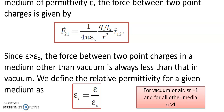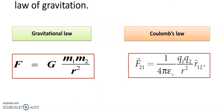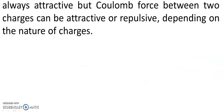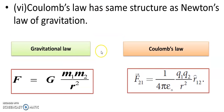So in Coulomb's law, we place two charges in vacuum or free space and get a certain value. When we place two charges in some other medium rather than vacuum, the value is always less than that in vacuum. Coulomb's law has the same structure as Newton's law of gravitation — this is a very important aspect. Both are inversely proportional to the square of the distance between them; you can see R square in both the gravitation law and Coulomb's law.